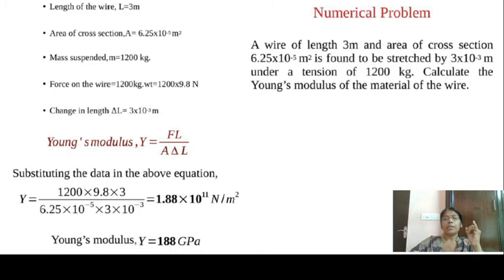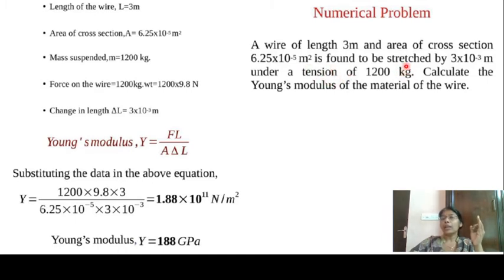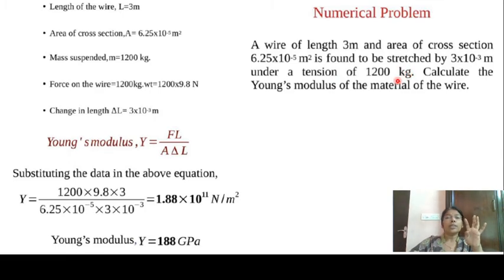Problem: A wire of length L equal to 3 m, area of cross-section 6.25 × 10⁻⁵ m², is found to be stretched by δL equal to 3 × 10⁻³ m under a tension of 1200 kg. Since the unit is kg, we treat tension as a force: F equals mg equals 1200 × 9.8 N. Calculate the Young's modulus.